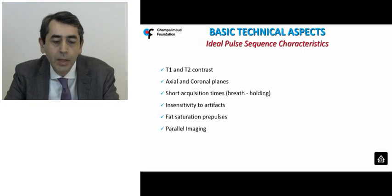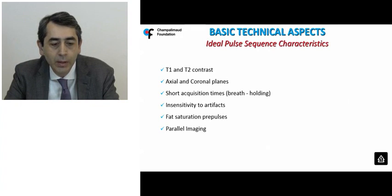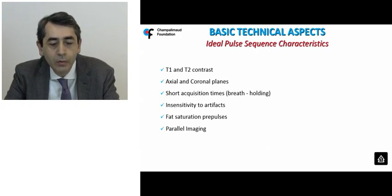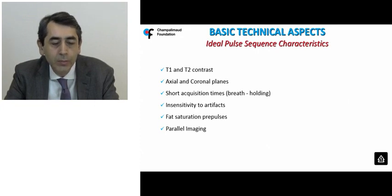The ideal pulse sequence characteristics should comprise both T1 and T2 contrasts, applied in axial and coronal planes. It should be fast enough to permit comfortable breath-holding, insensitive to artifact formation, with fat suppression prepulses preferably incorporated. And last but not least, parallel imaging, which is the main method to optimize spatial resolution and scan time.